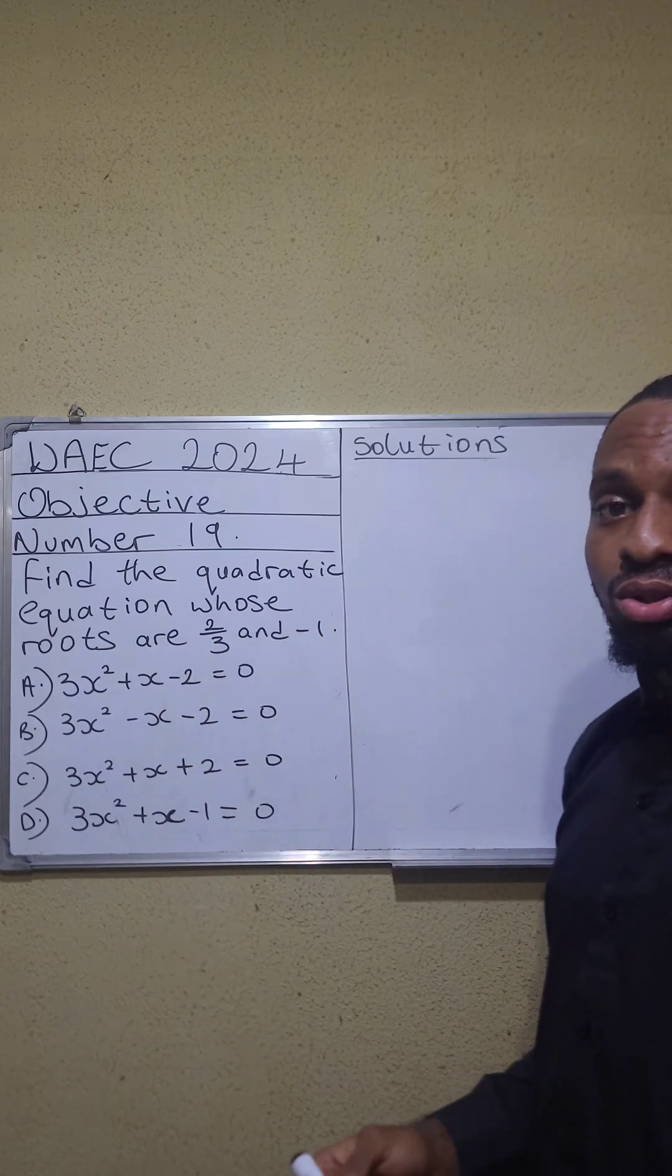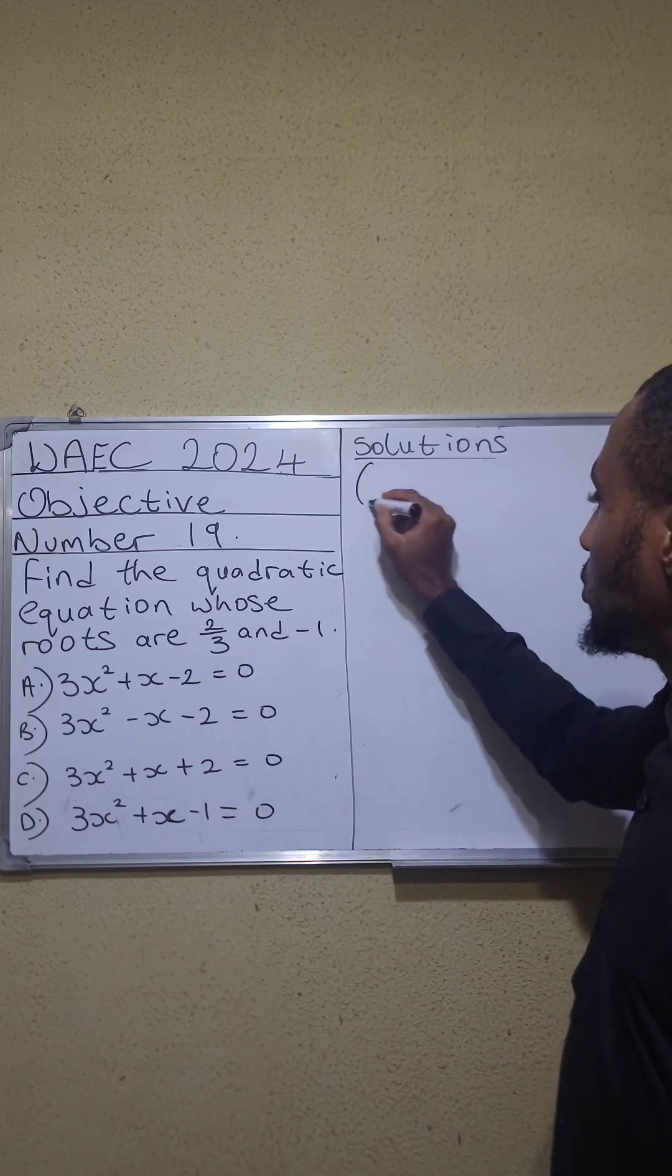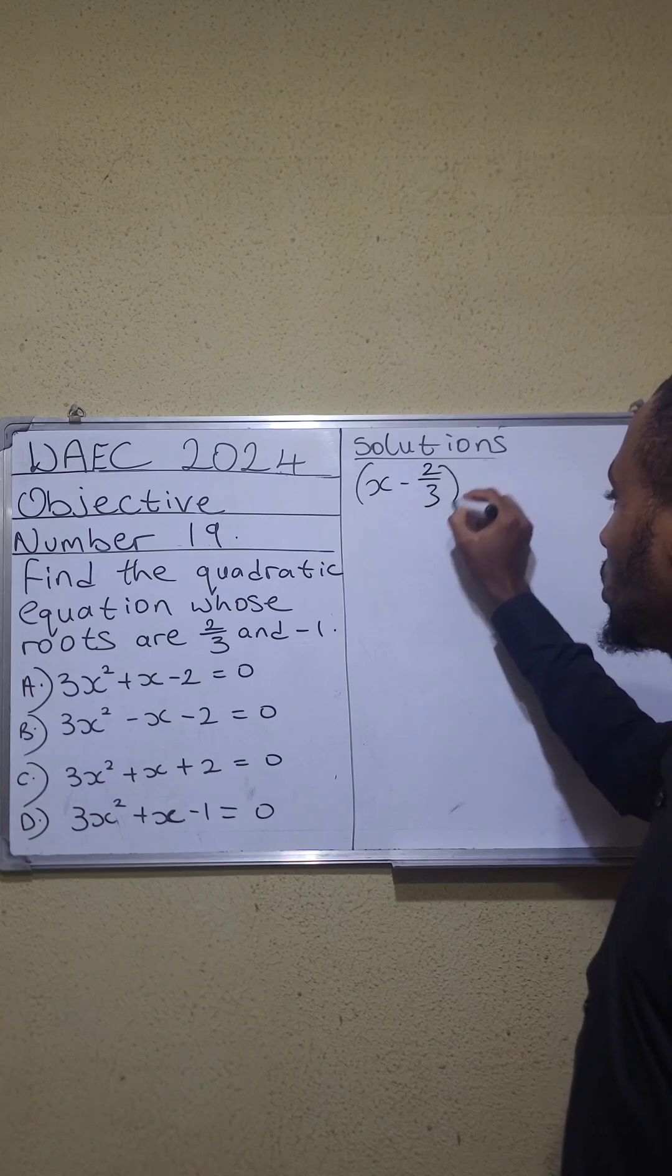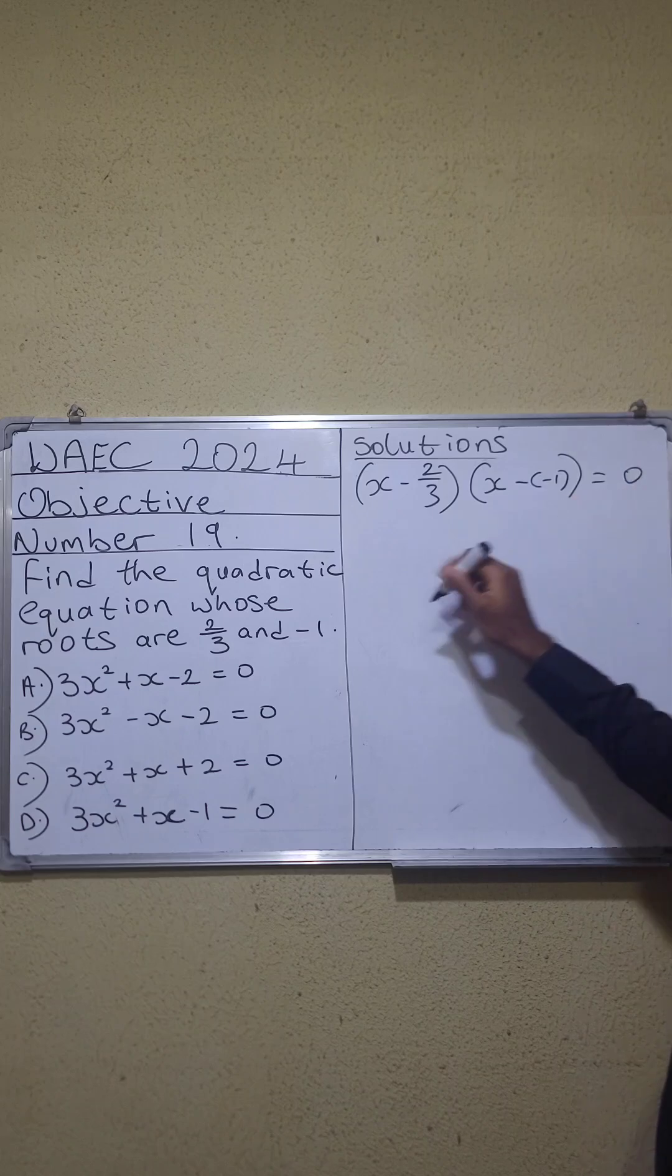The first thing to do is to subtract both roots from x. This becomes x minus 2 over 3 and x minus minus 1 equals 0.